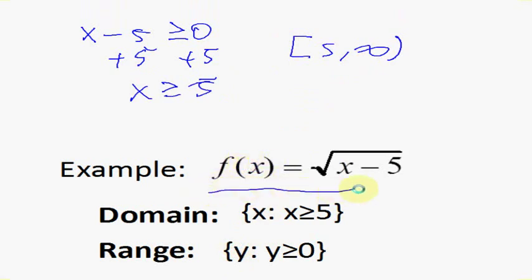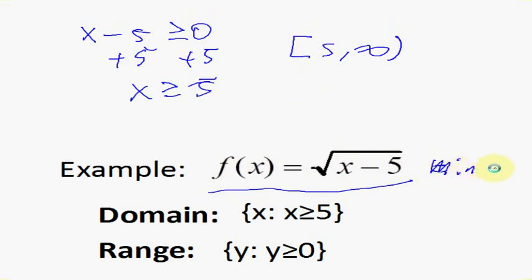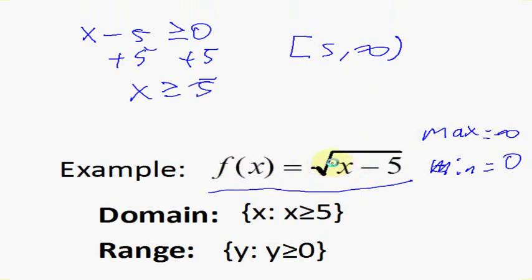To find the range, we have to understand the nature of this function. This function will continuously increase — when x gets bigger, so does y. We need to figure out the lowest value this can possibly be. When we input x equals 5, the function equals 0; that is your minimum. Your maximum is infinity, because this is an increasing function. So our range starts at 0, including 0, and goes all the way up to infinity, not including infinity: [0, ∞). That's how we write our domain and range.